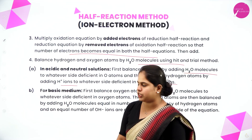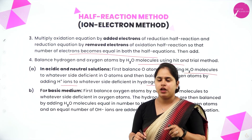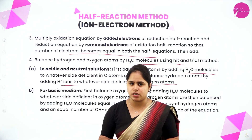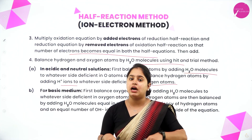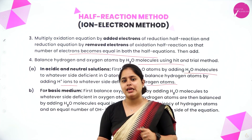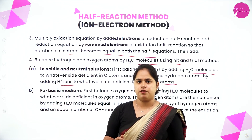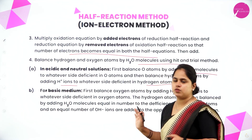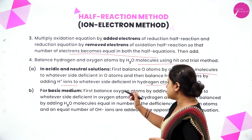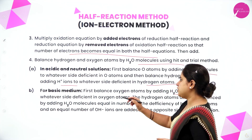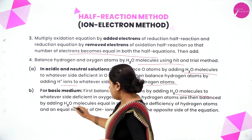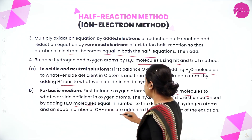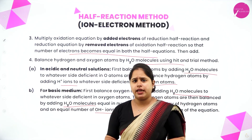For basic medium, the first step is the same: add water molecules to whichever side is deficient in oxygen. Then, instead of adding H⁺ ions, we add water molecules to the other side equal to the number of hydrogen atoms required. To balance that, the exact number of OH⁻ ions is added on the opposite side. This might be a little confusing when you read it, but once we do the problems it will be clear. The hydrogen atoms are balanced by adding water molecules equal in number to the deficiency of hydrogen atoms, and an equal number of OH⁻ ions are added to the opposite side.